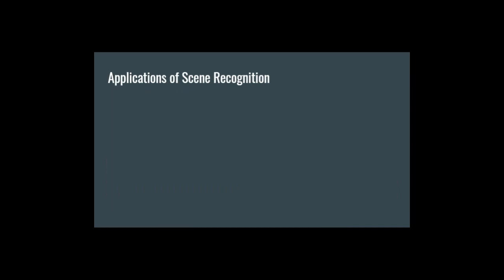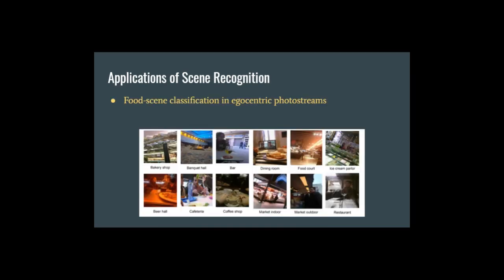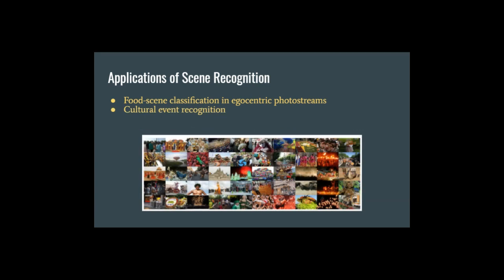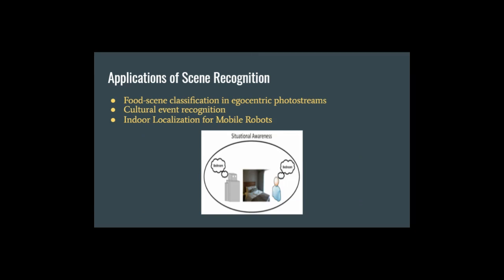Scene recognition is relevant and can be applied to various fields. Some examples of this include food scene recognition and classification from first-person perspective images, cultural event recognition, and more recently, interlocalization of mobile robots.